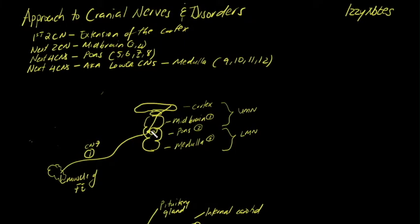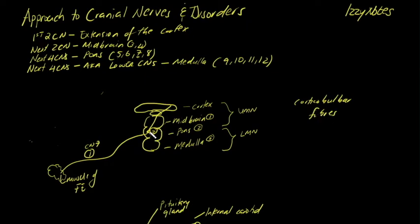A third site is the corticobulbar fibers. The cortex has to communicate with the brainstem, and these corticobulbar fibers connect the nucleus of each cranial nerve to the cortex. Every cranial nerve typically has a corticobulbar fiber connecting it to the cortex, and so you can have a lesion at the corticobulbar fibers.